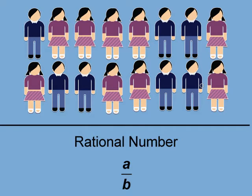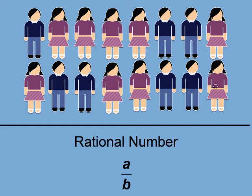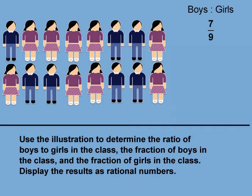Now count the number of girls. There are 1, 2, 3, 4, 5, 6, 7, 8, 9 girls. So the ratio of boys to girls is shown here. The ratio is 7 ninths, or 7 to 9.